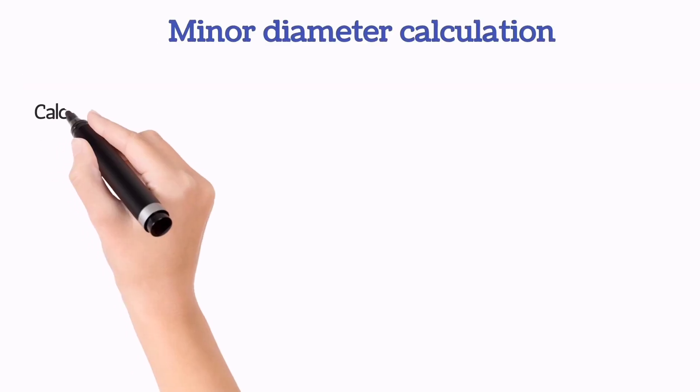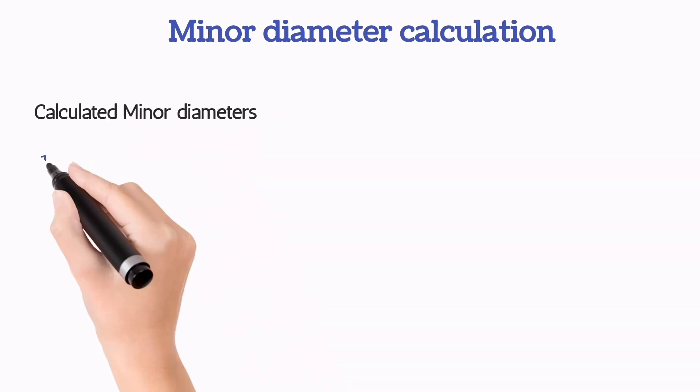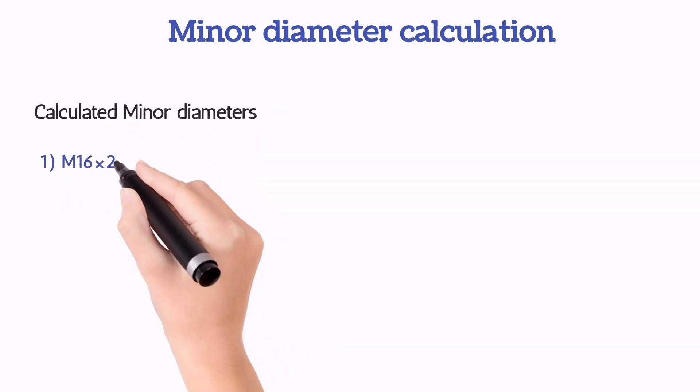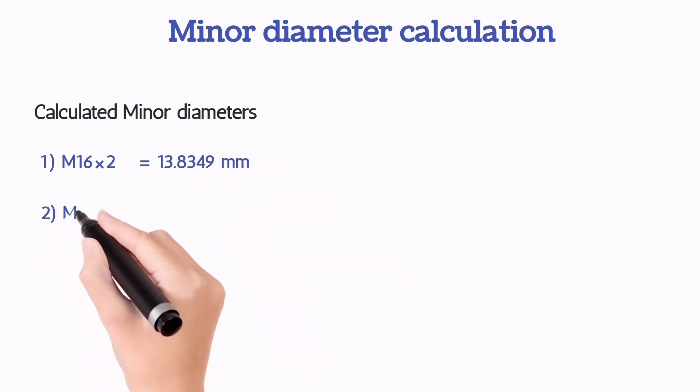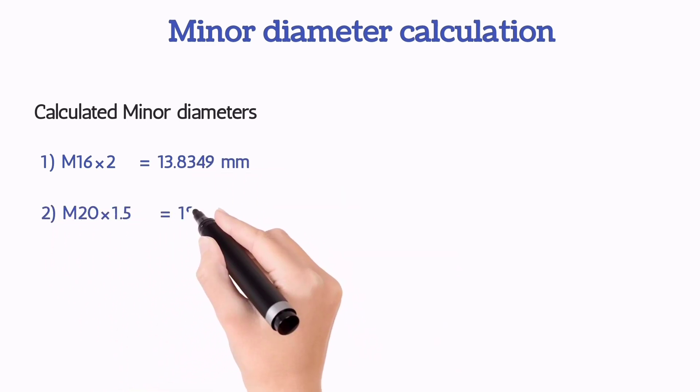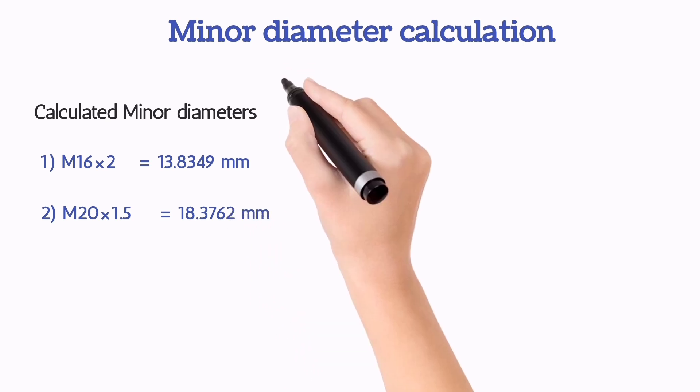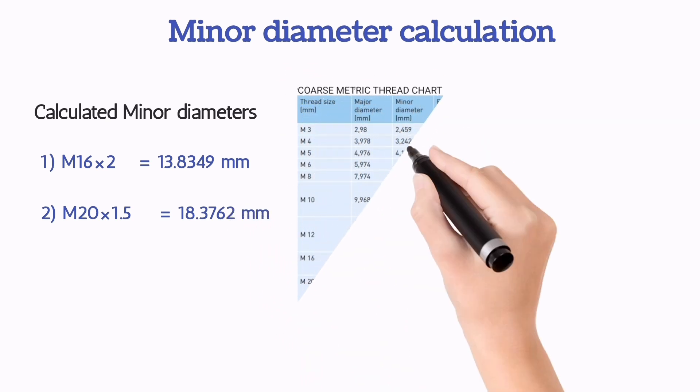The both calculated diameters are 13.8349mm for M16 times 2, and 18.3762mm for M20 times 1.5.